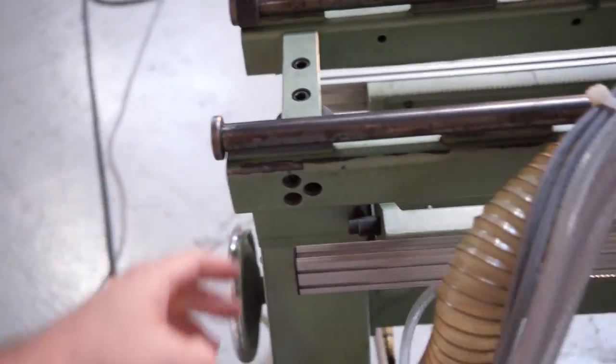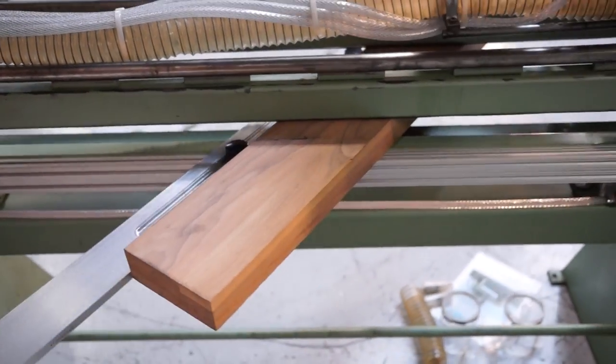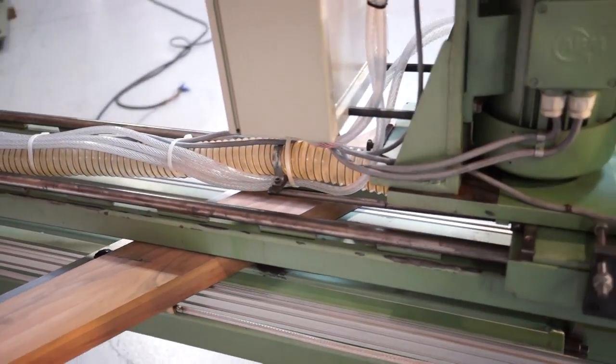This dust collection hose can be put out of the way up here. It hangs off the back or to the side depending on what you're doing. Just a really unique machine.